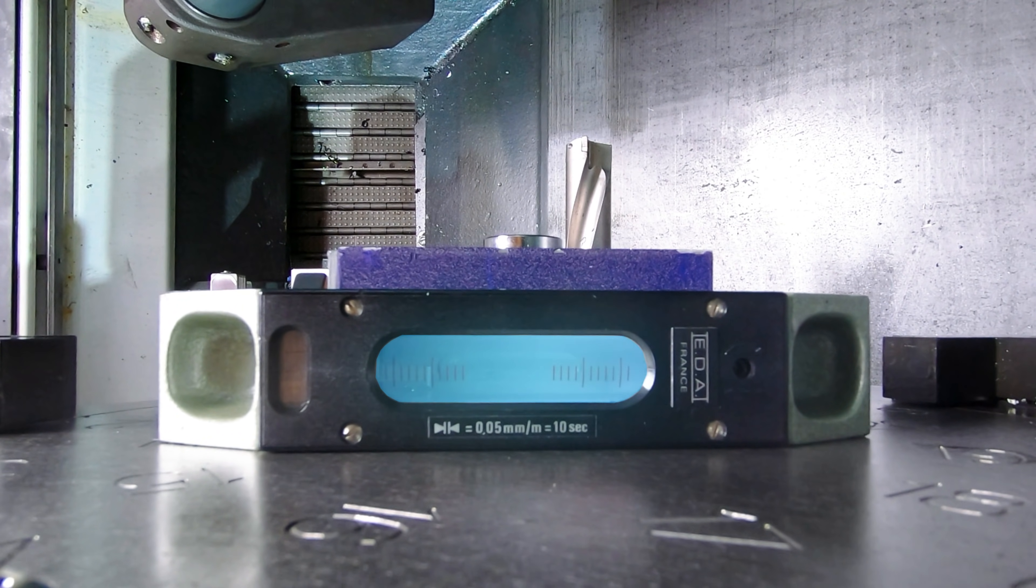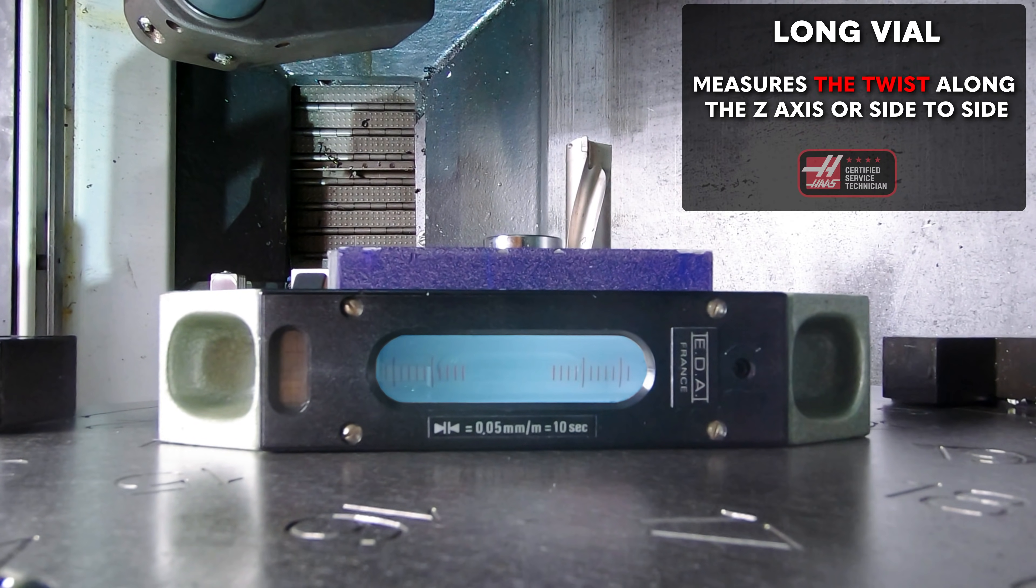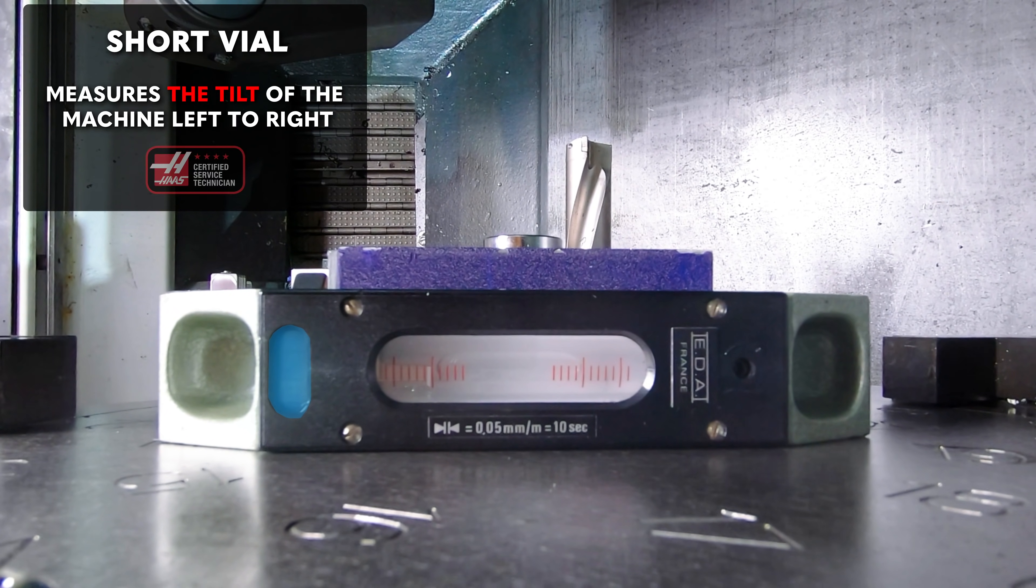We will use two vials to measure the X and Z axis respectively. We will position the long vial parallel to X axis. This will allow us to measure the twist along the Z axis or side to side. We'll use the short vial to measure the tilt of the machine left to right. This influences how the coolant drains from the machine.